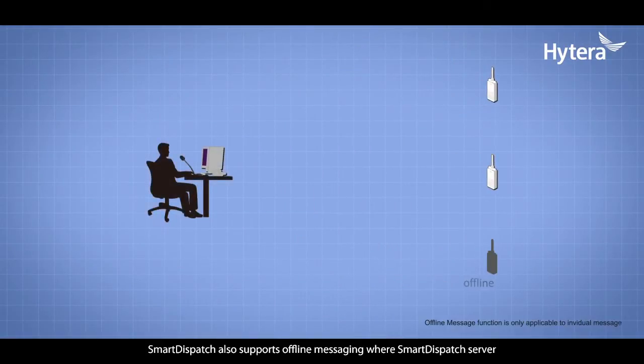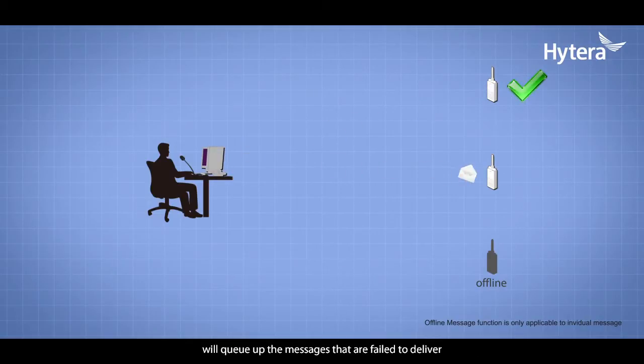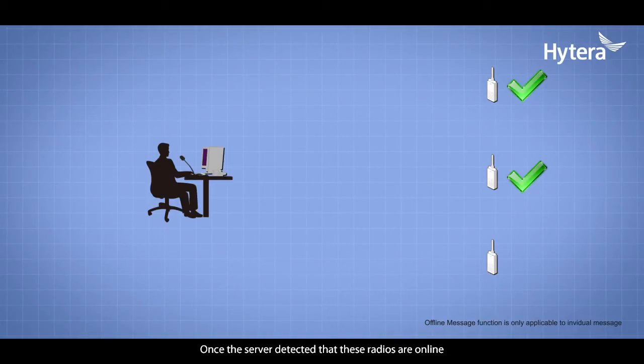Smart Dispatch also supports offline messaging, where Smart Dispatch Server will queue up messages that fail to deliver due to unreachable range or radio offline. Once the server detects that these radios are online, the queued messages will be forwarded.